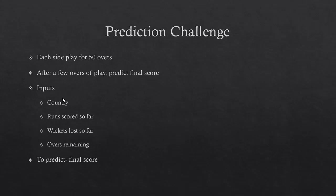For the prediction we take a few inputs: which country is playing, how many runs have been scored so far, how many wickets are lost, and how many overs are remaining. For example, at the 15th over in an India vs Australia game where Australia is batting — they've scored 75 runs, lost one wicket, and 35 overs remain (50 minus 15). Given these inputs, we want to predict the final score at the end of the 50th over.